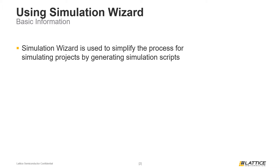The Simulation Wizard is a tool that can be used to create scripts for simulating Radiant projects. It is useful because it automates the process for setting up a project for simulation and requires very little user input. Another benefit is that users do not need to know how to create TCL scripts or how to set up simulations in ModelSim.